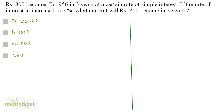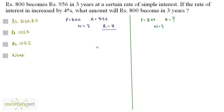There are two cases here. In the first case on the left hand side, the principal is Rs. 800 which amounts to Rs. 956 after 3 years, and the rate of interest is unknown — let that rate be X percent. In the second case, we have to find the amount, with the same principal Rs. 800, the same 3 years, and the rate of interest increased by 4%, so R equals X plus 4.